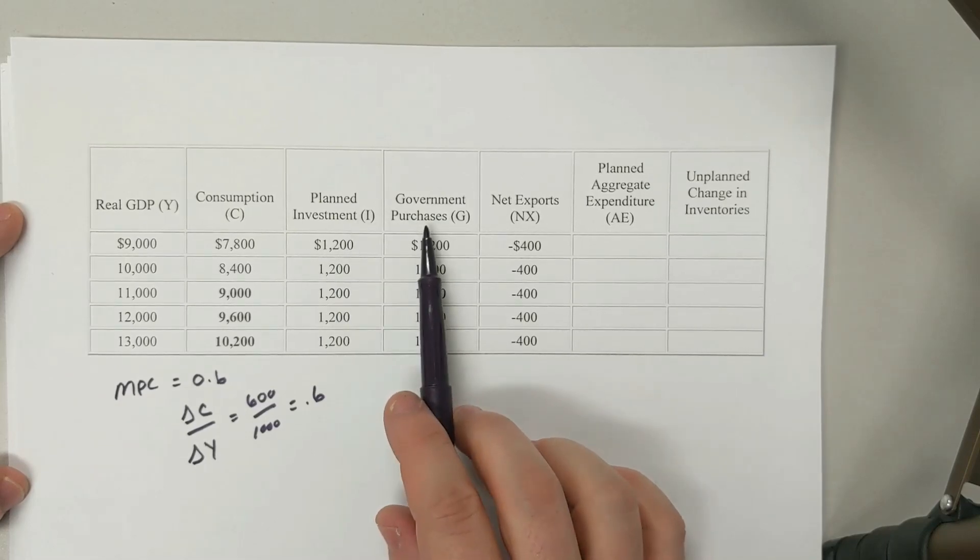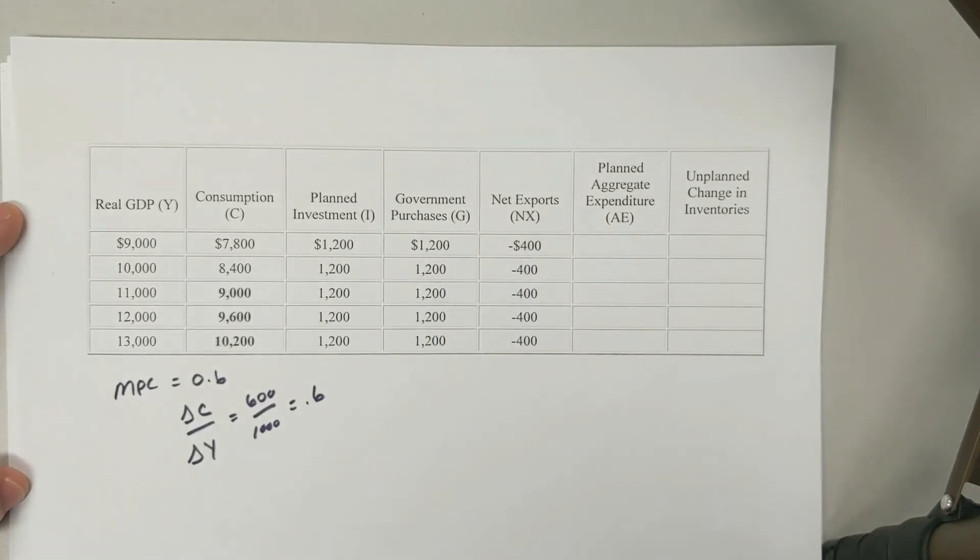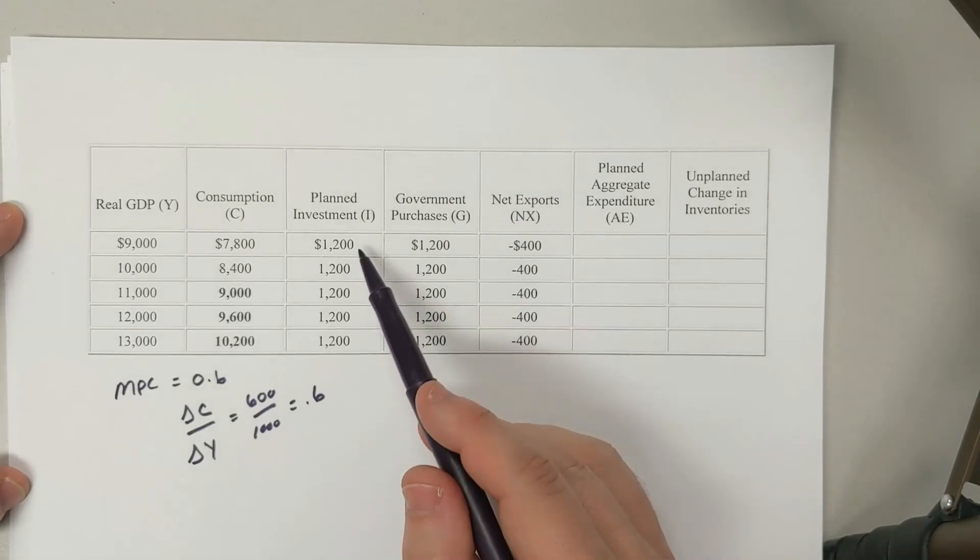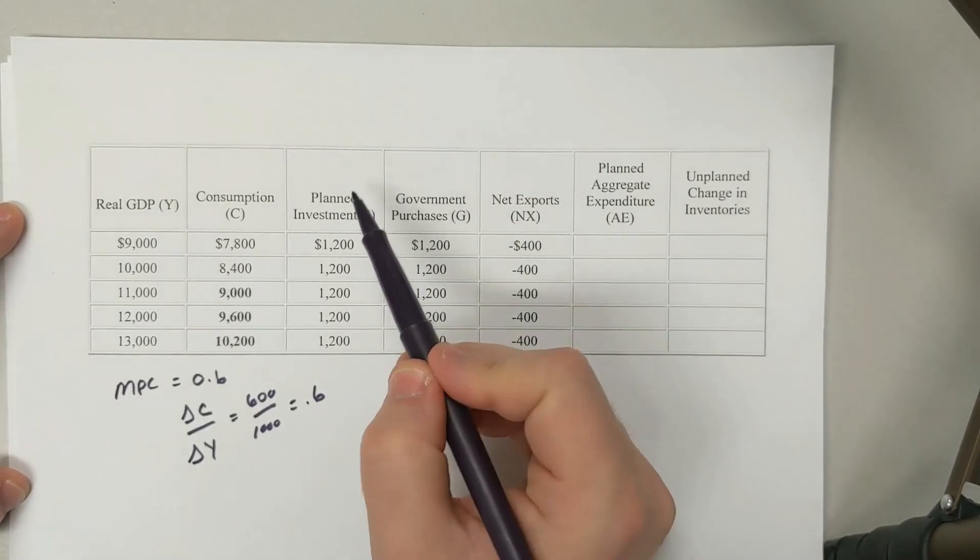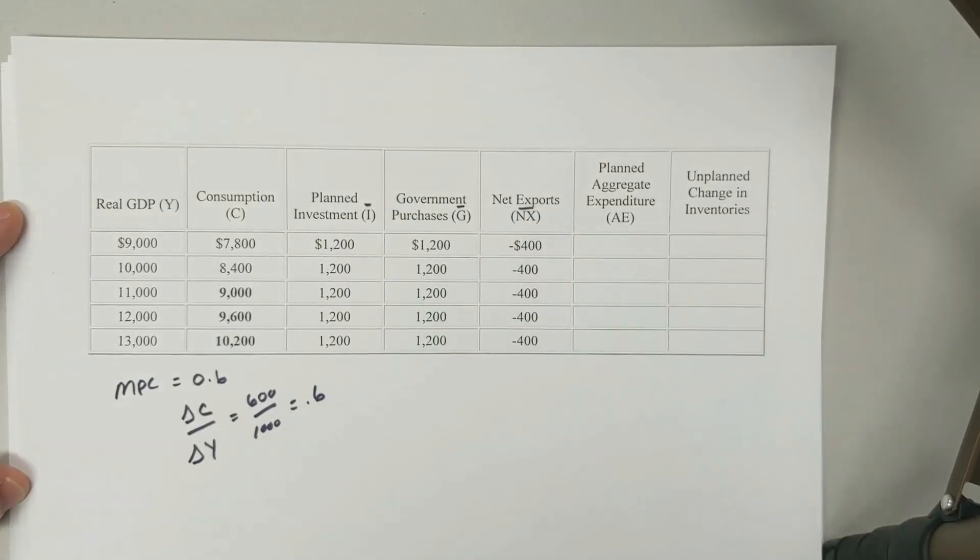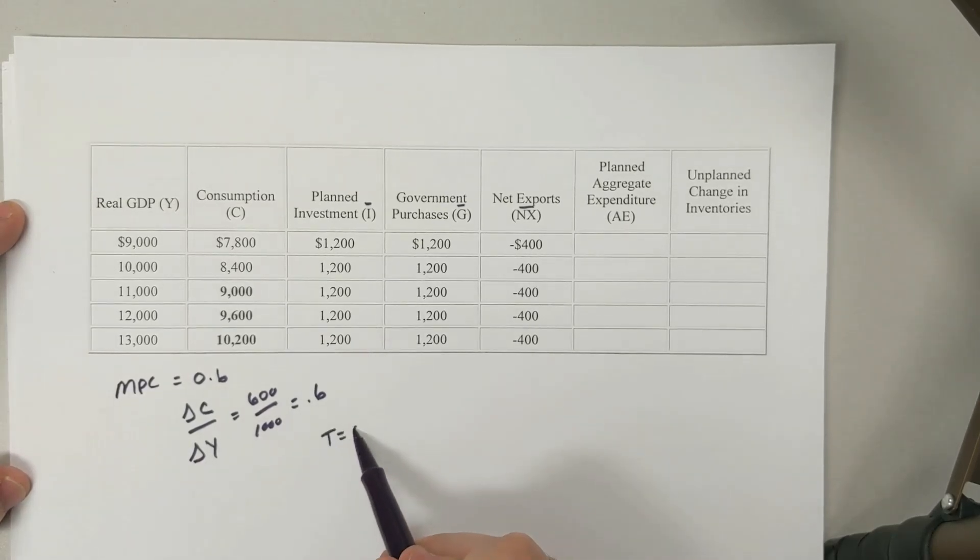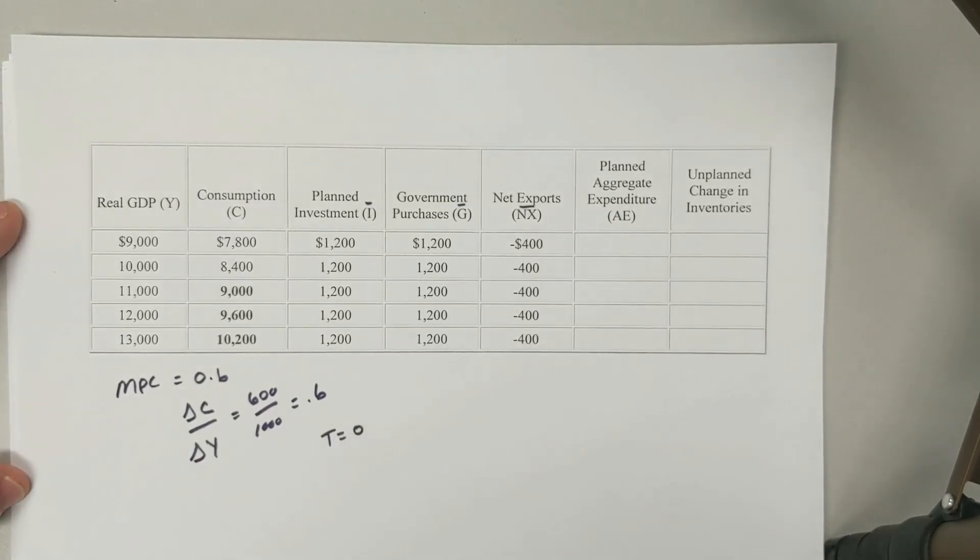We're also given planned investment, government purchases, and net exports. What do we notice here? We notice that they're always the same. So remember, we denoted these with bars over them to show that they're not changing. We also have the same assumption as before with taxes equaling zero, and now we can figure a few things out.